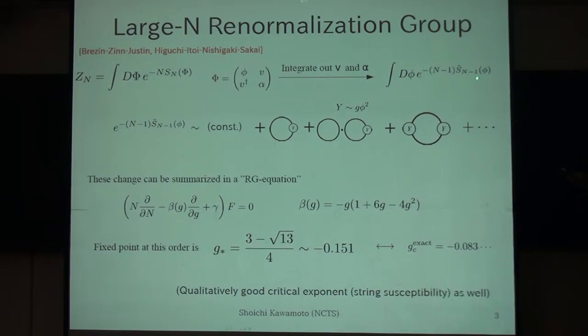Then you can obtain some new action for the a bit smaller size of the matrix. So this integration may be performed in this way. This two part gives you the correction to the quadratic part, and this is the correction to the quartic part.